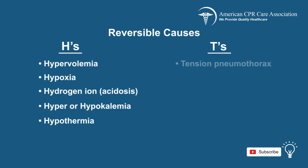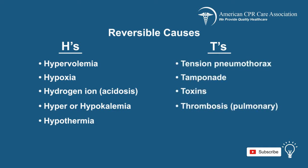The T's are tension pneumothorax, tamponade, toxins, thrombosis — both pulmonary and coronary. Now, let's take a look at a scenario.